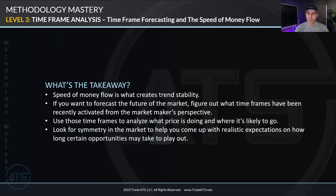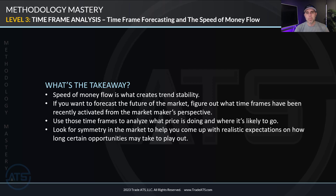The takeaway of this lesson: speed of money flow is what creates trend stability, and we are highly interested in the trends of the market. If you want to forecast the future of the market, figure out what timeframes have been recently activated from the market makers' or institutions' perspective — aka big, slow money. Use those timeframes to analyze what price is doing and where it's likely to go. Look for symmetry in the market to come up with realistic expectations on how long certain opportunities may take to play out. Put all these things together, and you will find that you'll be forecasting and knocking trades out of the park better than you ever have before.